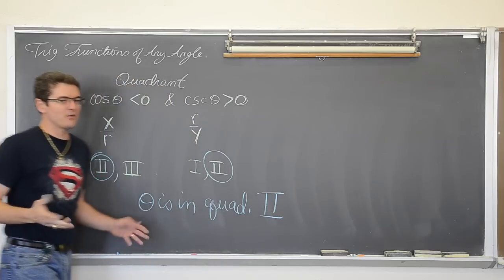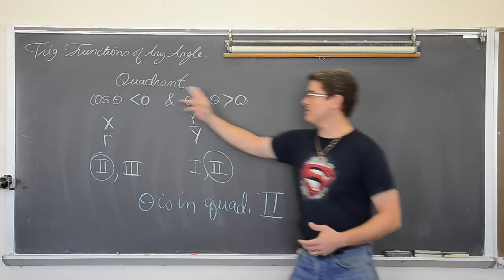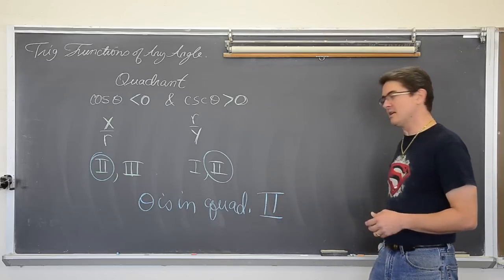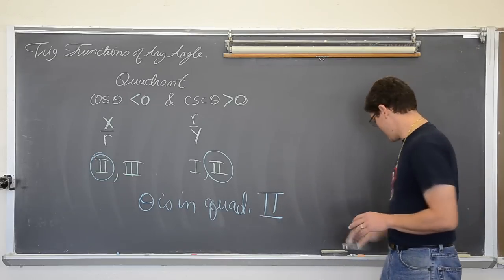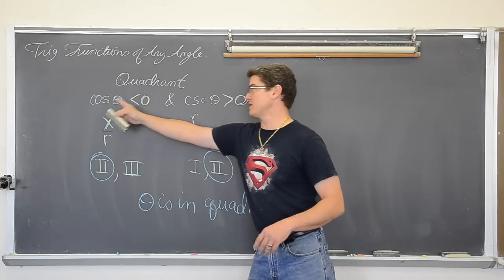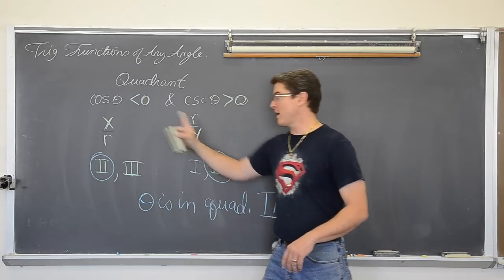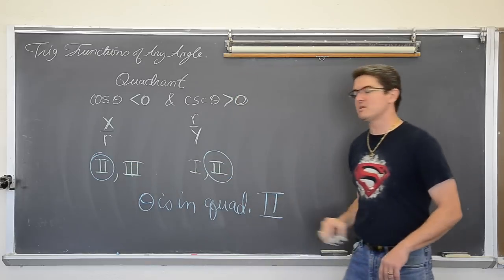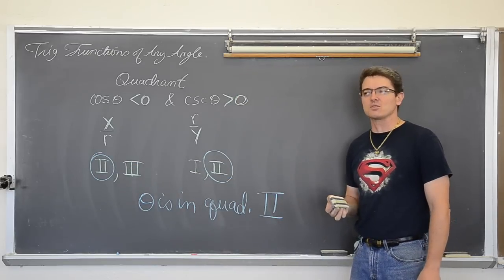So we are not evaluating the trig function necessarily, but we are using their values to identify the unknown angle — at least the quadrant that this unknown angle is lying in. That is how I use trig functions and their signs: go to those x, y, r ratios and use them to evaluate what quadrant your angle is actually in.